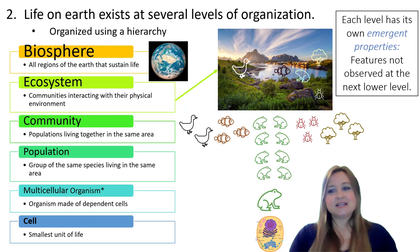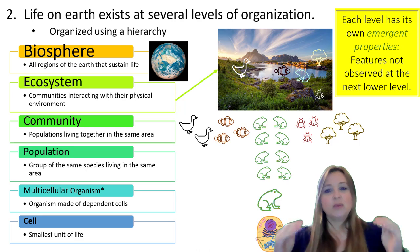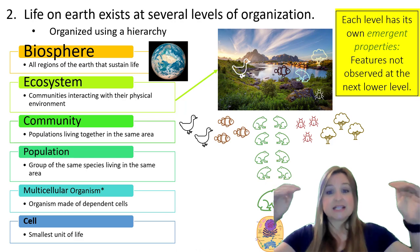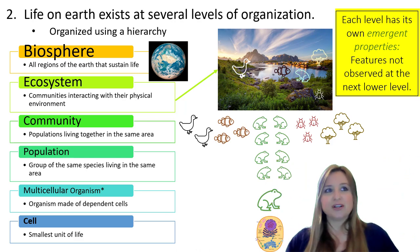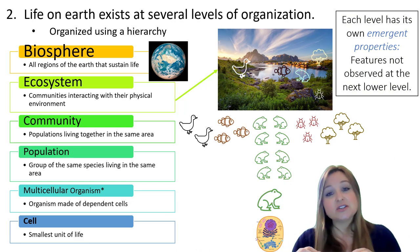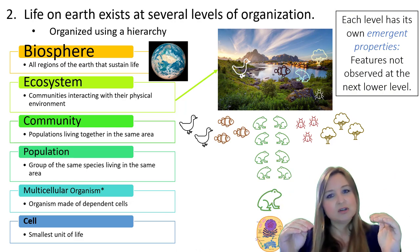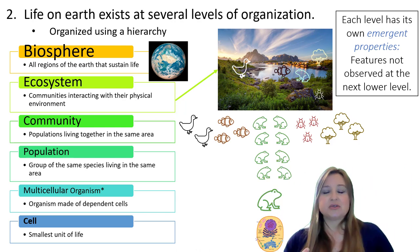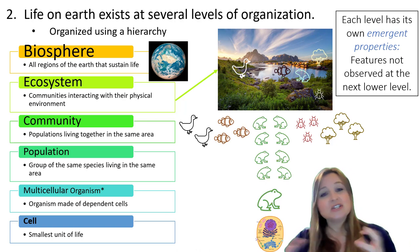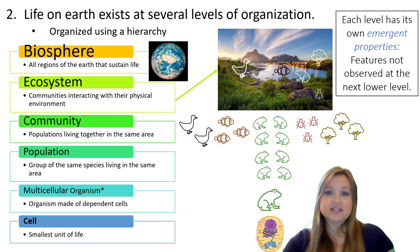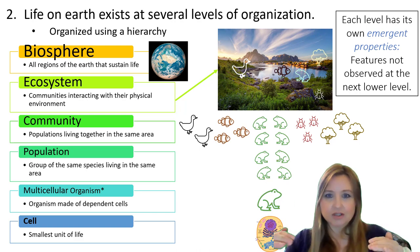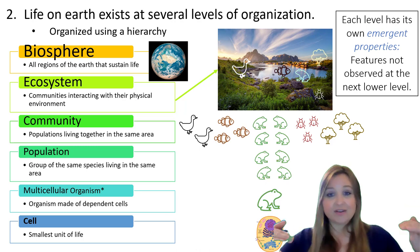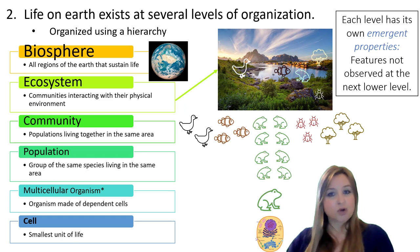I want to talk about emergent properties. When we move up the levels — from one structural level to the next higher one — emergent properties appear. These are features that you can't observe at the lower level but you can observe at the next higher level of the hierarchy. Emergent properties arise due to the relationship and the interactions between the components of the system at that particular level.